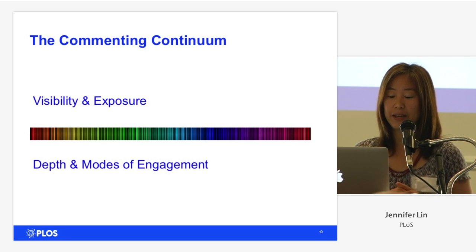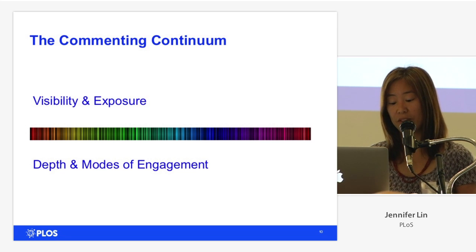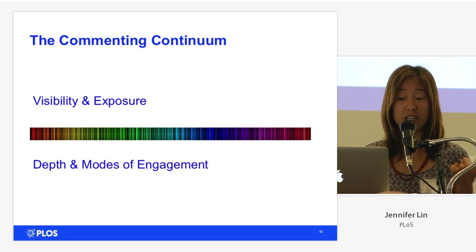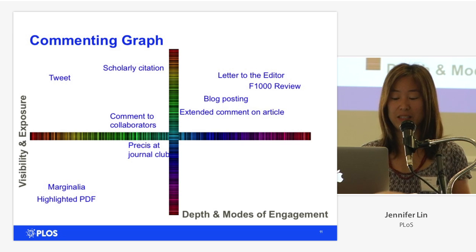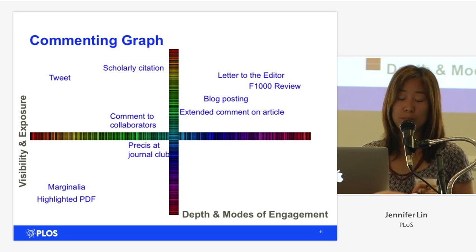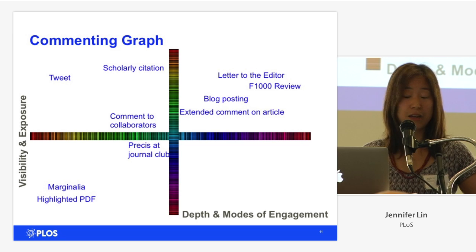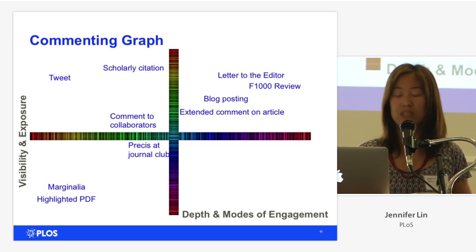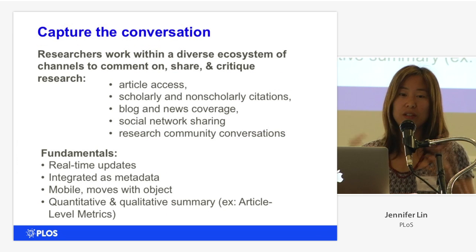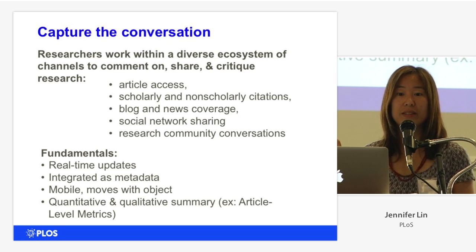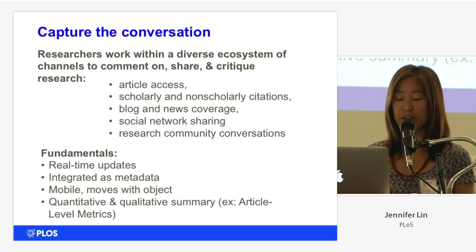We'd like to think that strict annotations are critical to the researcher workflow. We're also thinking about them more broadly within the larger ecosystem of commenting. If we think of just two axes — visibility and exposure, as well as depth and modes of engagement — I've done a quick map using these two dimensions, laying out a small sample of ways in which researchers are both annotating and commenting on research literature. It's important to capture the conversation, which is what we're here to do. It's important to measure, rank, and summarize the conversation.